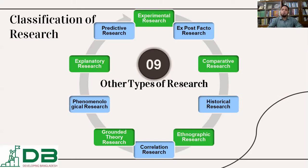Explanatory research. Explanatory research is defined as an attempt to connect ideas to understand the cause and effects of the research. There are two variables — one may be the cause and another may be the effect. For example, if someone is infected by the COVID virus, then they may feel fever. So the cause is infection by the virus and the effect is feeling fever or rising temperature in the body. This is explanatory study — to explain the cause of feeling the fever.